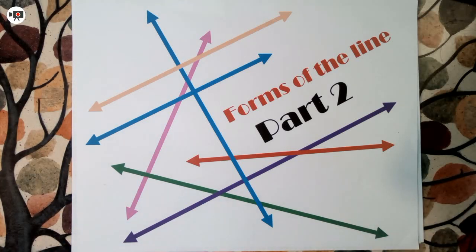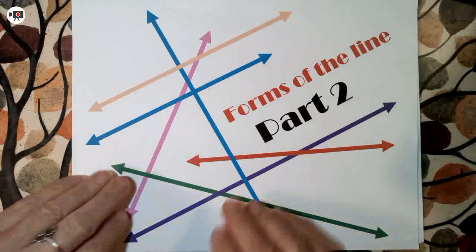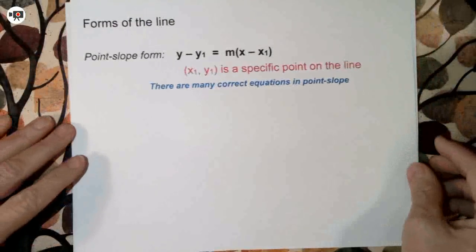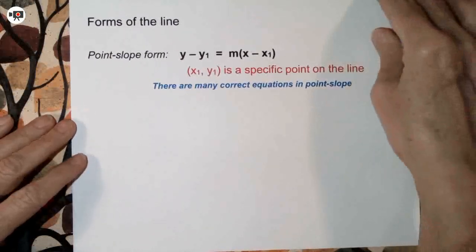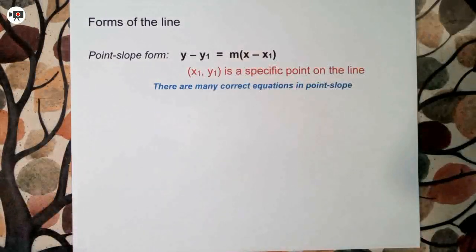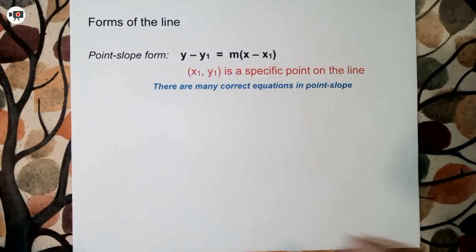This is a high school algebra lesson on forms of the line — this is the second part of it. The one we're going to talk about now is the form of the line called point-slope. Point-slope is used a lot now and even more in geometry, so it's important that we learn it. It is one of the three main ways.